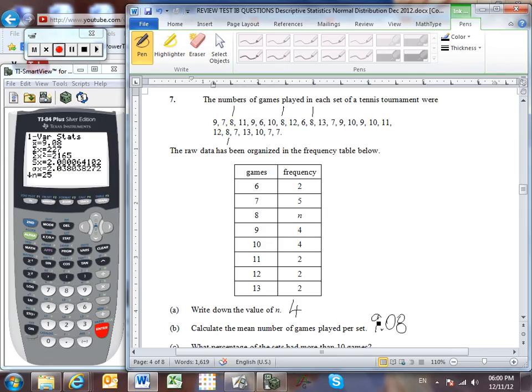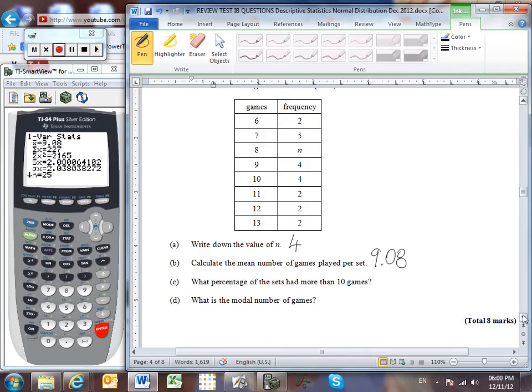Okay, so now we're ready then to go into stat, calculate, one var stats, and here our data values were entered into list one and our frequencies were entered into list two. So you must include both of those in your one var stats function. And you can see that the mean is 9.08. Nicely, already rounded, or it's in fact exactly 9.08, it's not even rounded.